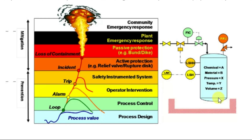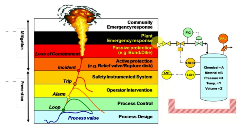If this is still not contained — because the operator misses the action, the emergency block valve does not act, and the pressure relief valve does not act — the chemical keeps on adding into the tank and overflows from the dike also. In this case, it calls for a plant emergency response. In plants there is a health, safety, and environment team with process safety personnel. Trained people will take action during such emergencies, shown in black, to contain any further hazard from spreading out.